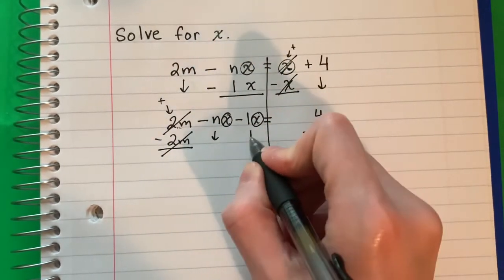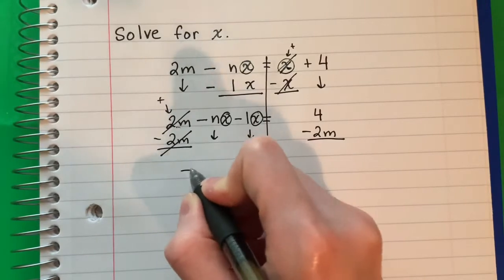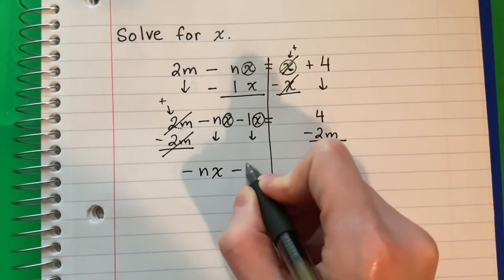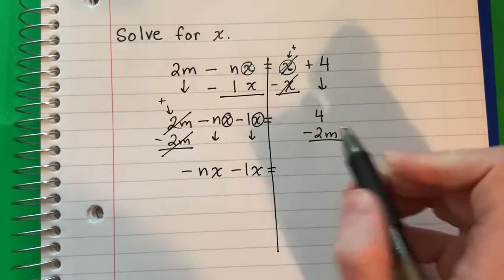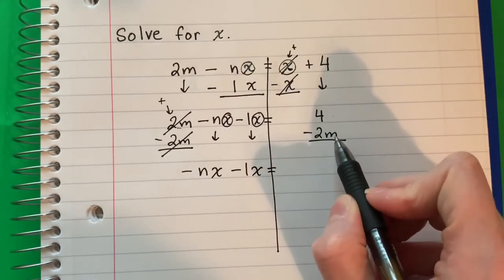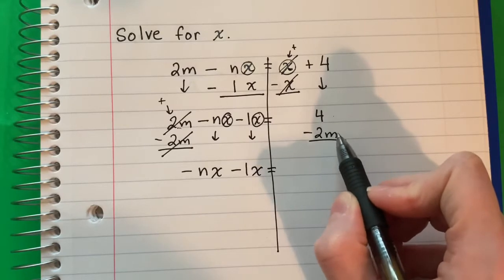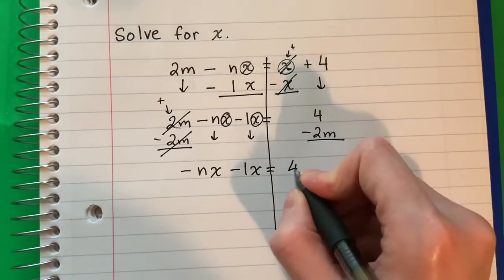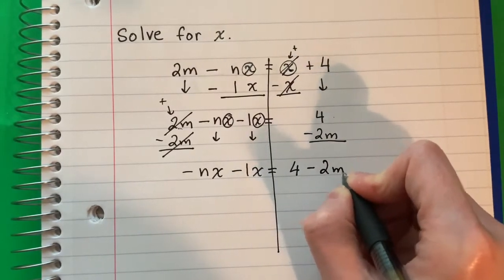Copy both of these down. So negative nx minus 1x equals. These are not like terms. This is no m, this is m. They are different. Do not put in the calculator. You will copy. So 4 minus 2m.